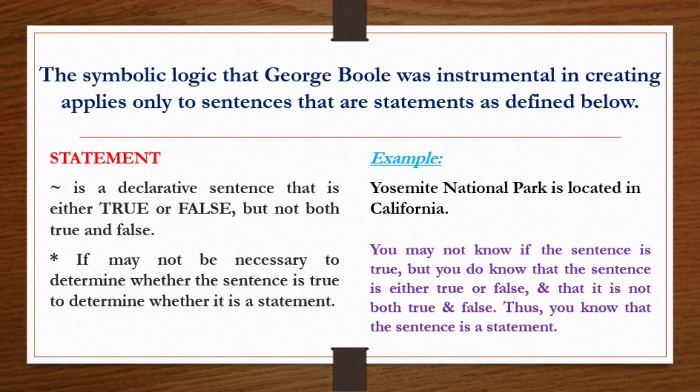Let's discuss about a statement. It is a declarative sentence that is either true or false, but not both true and false. It is an expression of opinion — it's either correct or wrong — but it cannot be both true and false. It may not be necessary to determine whether the sentence is true or false in order to determine whether it is a statement.